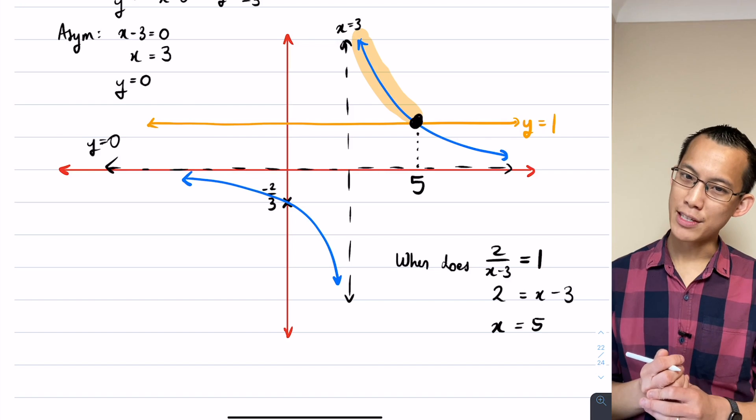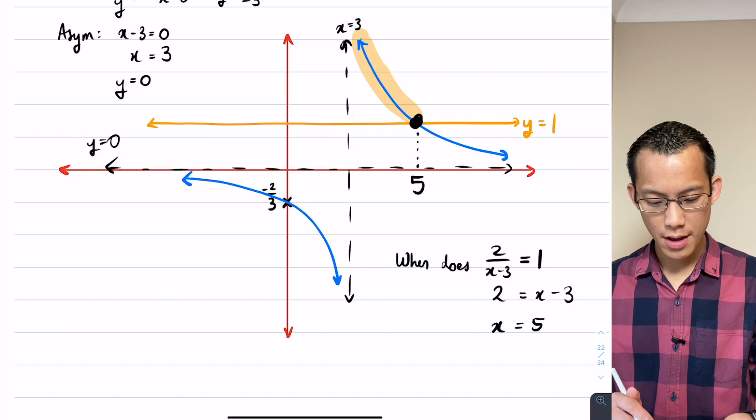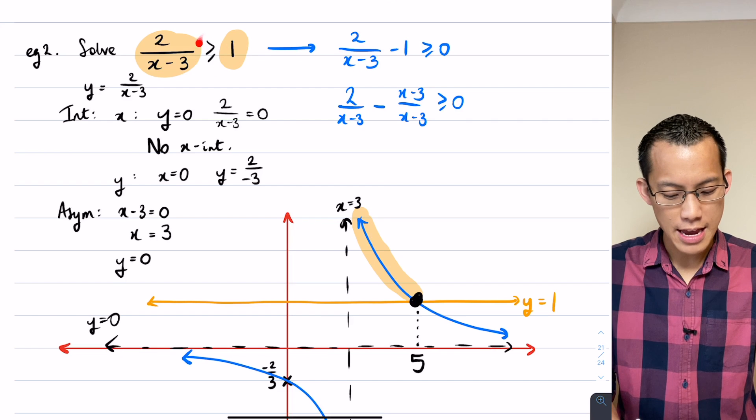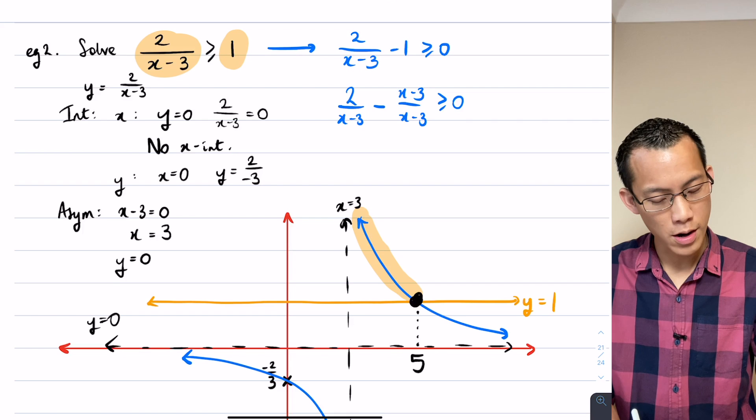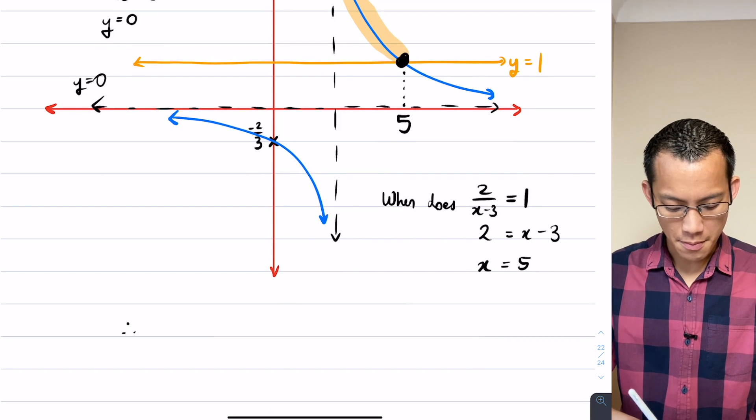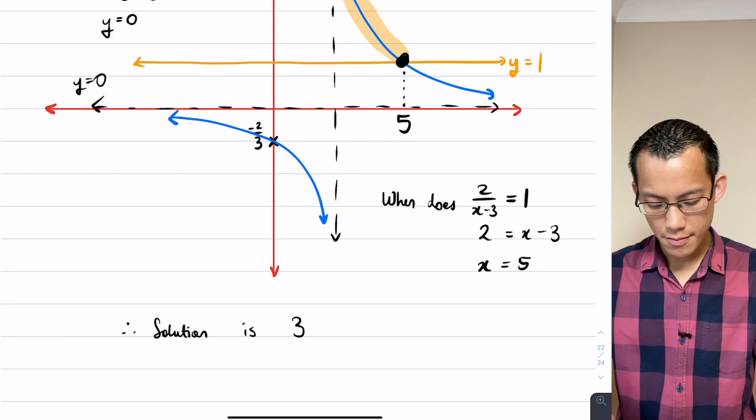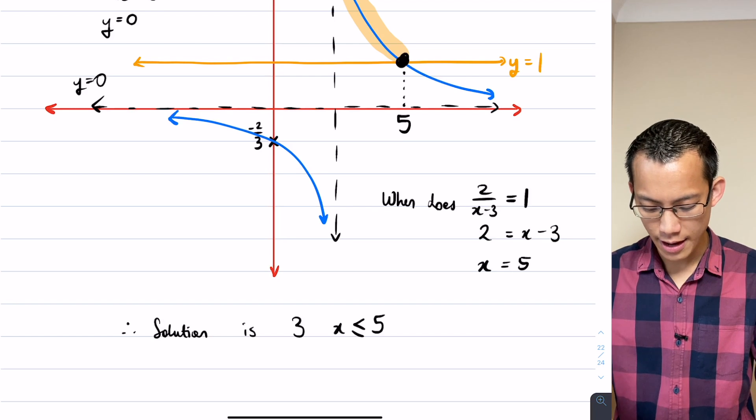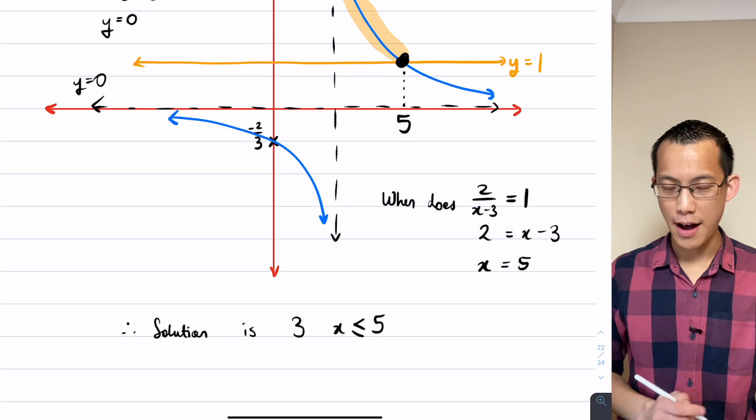So now I'm ready to write my solution. I want to be between 3 and 5, between 3 and 5. I look just quickly back at my original question and I notice that the boundary is included. You see that? It's greater than or equal to 1. Now what that would suggest is that therefore my solution is between 3 and 5.